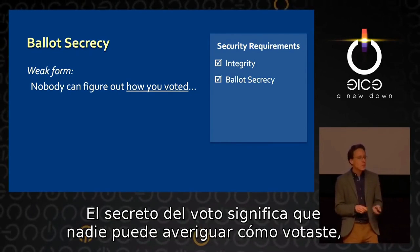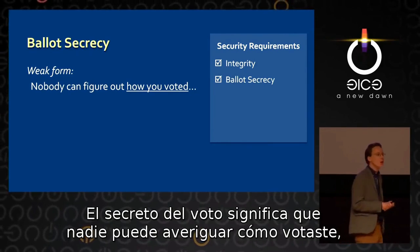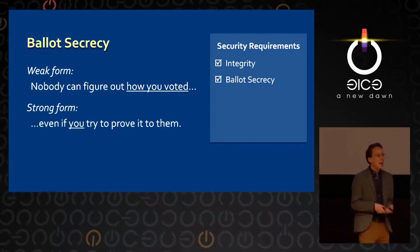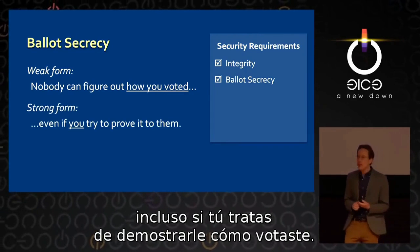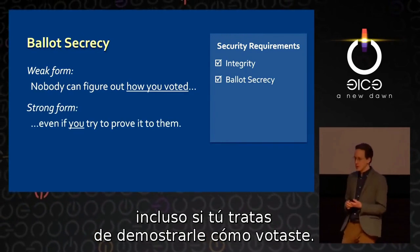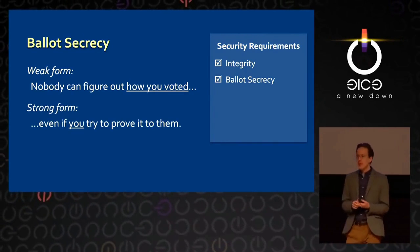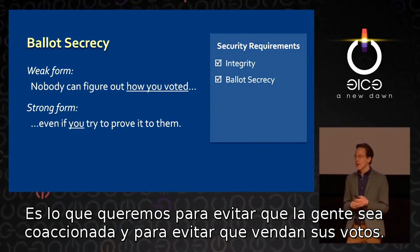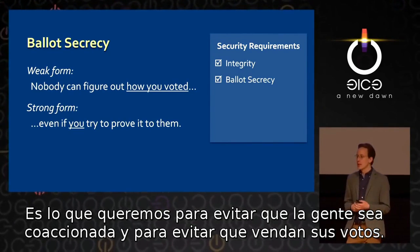The secret ballot says that no one can figure out how you voted, even if you try to prove to them how you voted. This is what we want: to prevent people from being coerced and to prevent them from selling ballots.